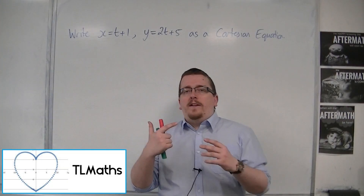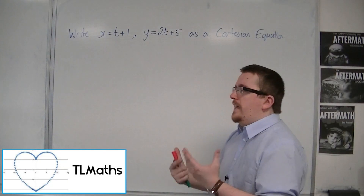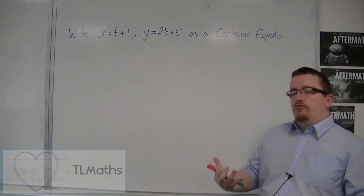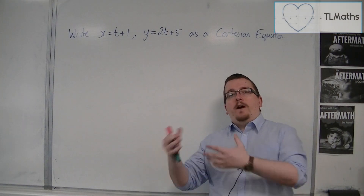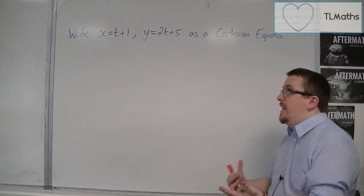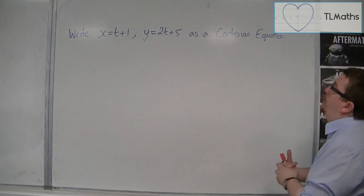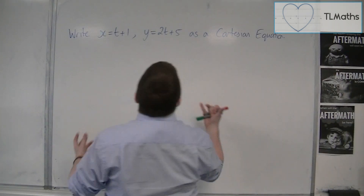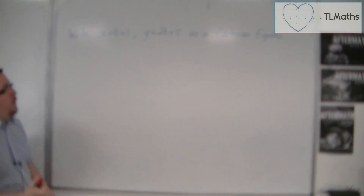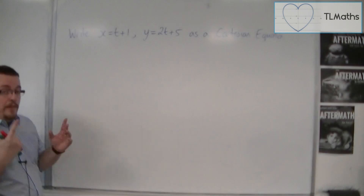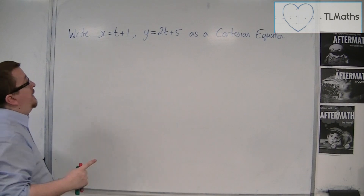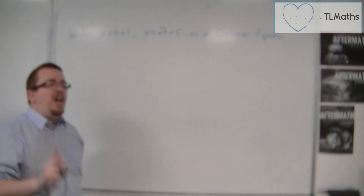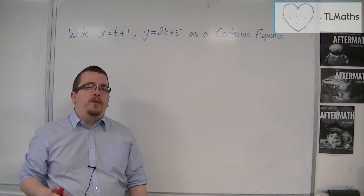We've looked at taking a Cartesian equation and writing it as a pair of parametric equations. Now can we do the reverse? Can we write a pair of parametric equations as a Cartesian equation? Well, yes we can in some cases, and this is one case where we can. There are a couple of routes you can go down.